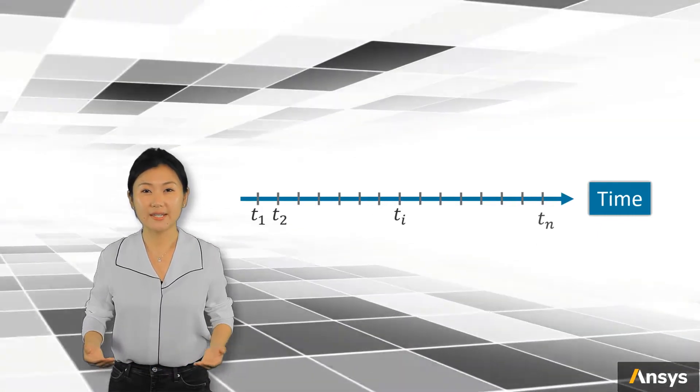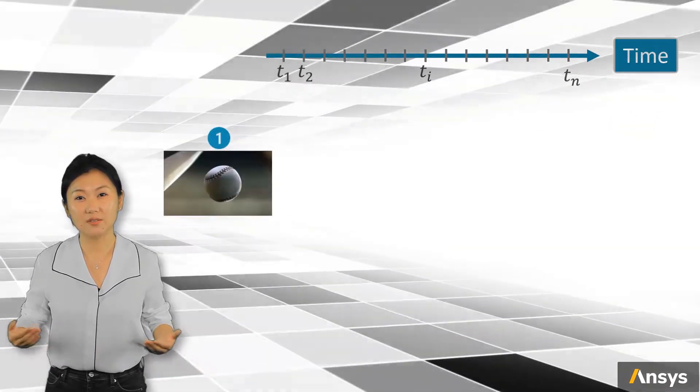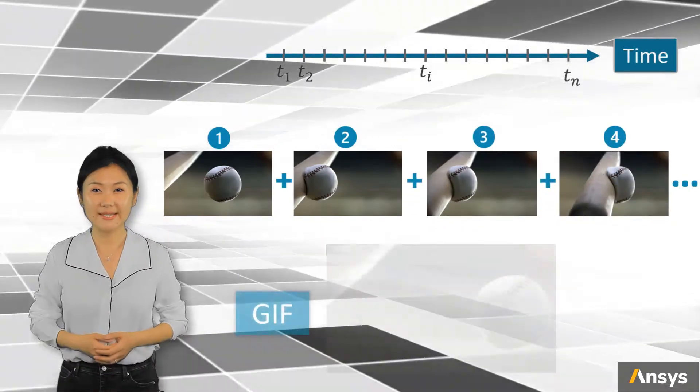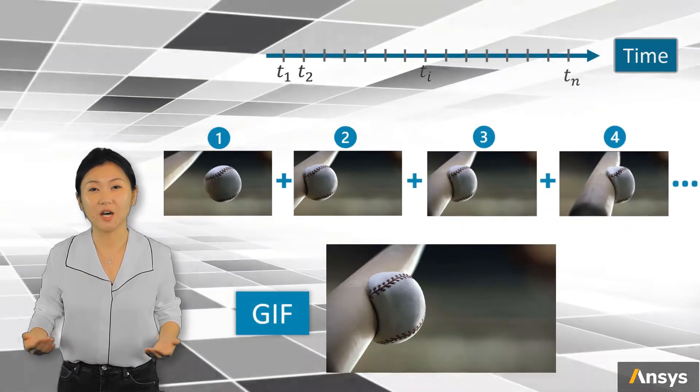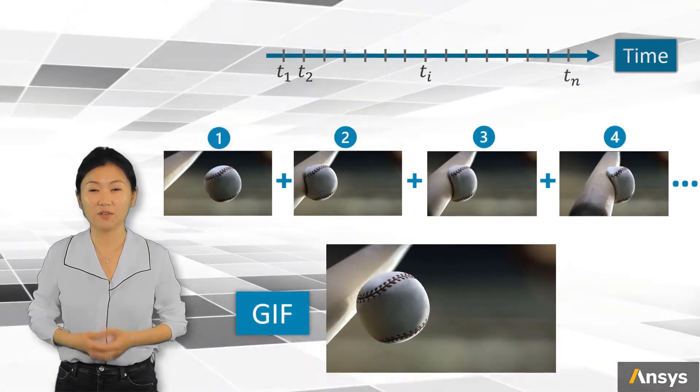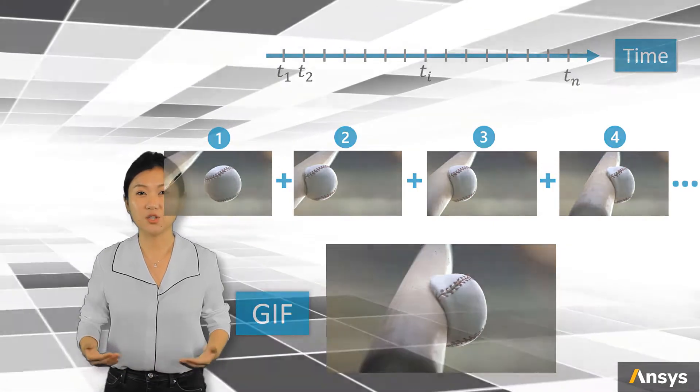To understand this, maybe you can think of how a GIF image uses a series of static images to present a moving object to you. The smoothness and level of continuity of the animation depends on how many images the GIF is made of, and that is the frame rate. Similar thing to time integration.